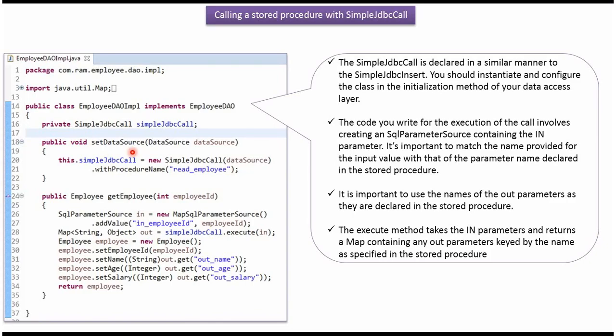Here you can see the setDataSource method. The Spring container creates a DataSource object and passes it to this method. That DataSource object will be set to the SimpleJdbcCall object, and the SimpleJdbcCall object is going to use the stored procedure read_employee.